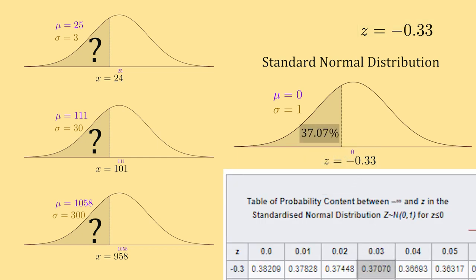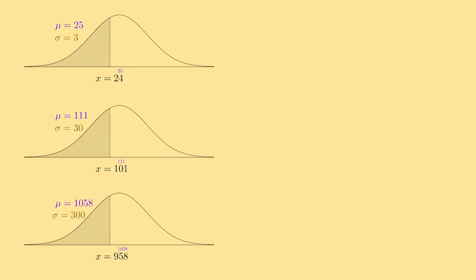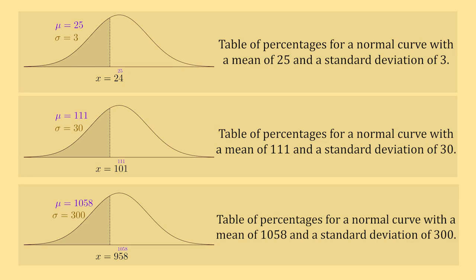What this means is that I only need the standard normal z-table in order to find these percentages for all possible normal distributions. If we didn't have this process, then we would have to have a unique table of percentages for an infinite number of normal distributions, which would be kind of frustrating.